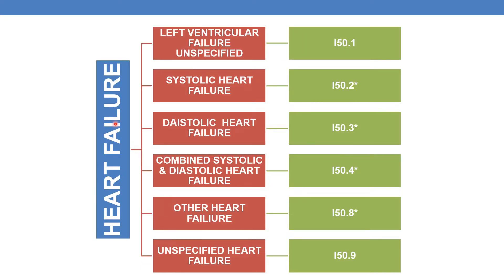For left ventricular heart failure, we code I50.1. This code is not further subcategorized. For systolic heart failure, it is the I50.2 series, which is further subcategorized. For diastolic heart failure, it is I50.3. For combined systolic and diastolic heart failure, it is I50.4. For other heart failure, it is I50.8, and for unspecified heart failure, it is I50.9.